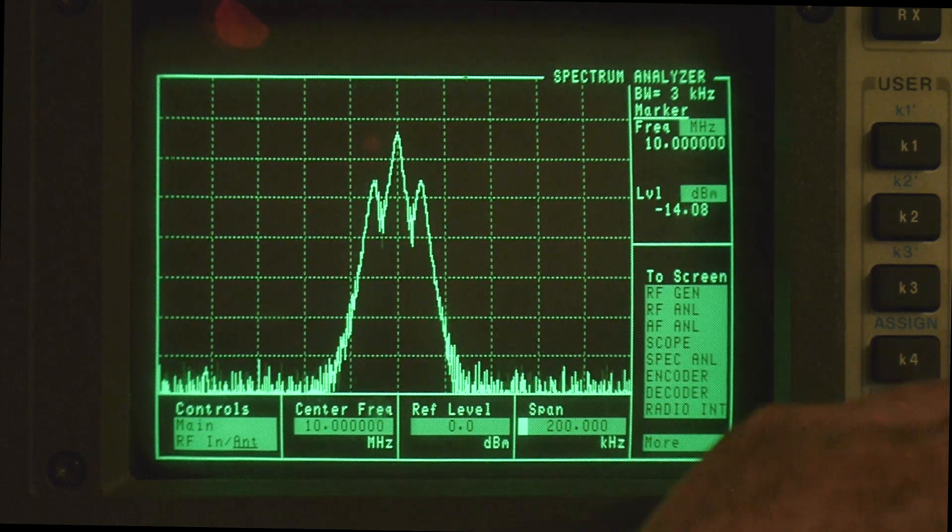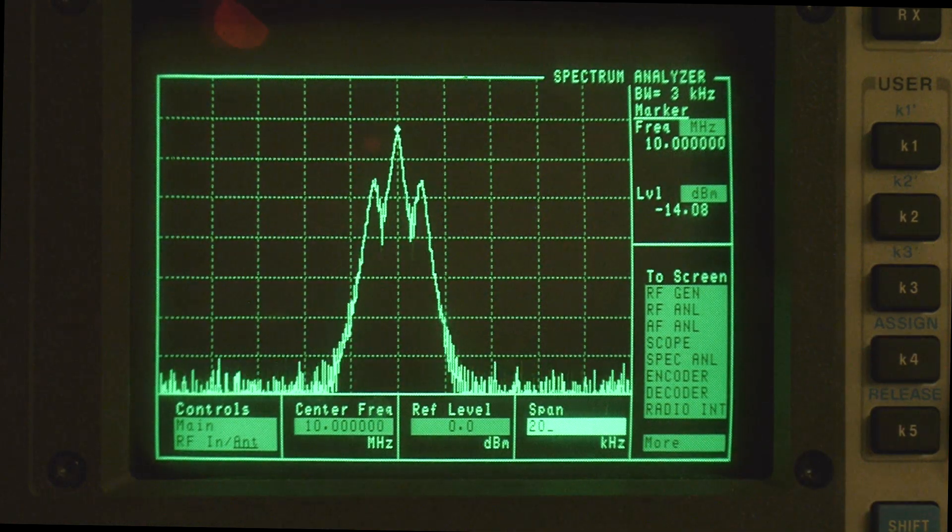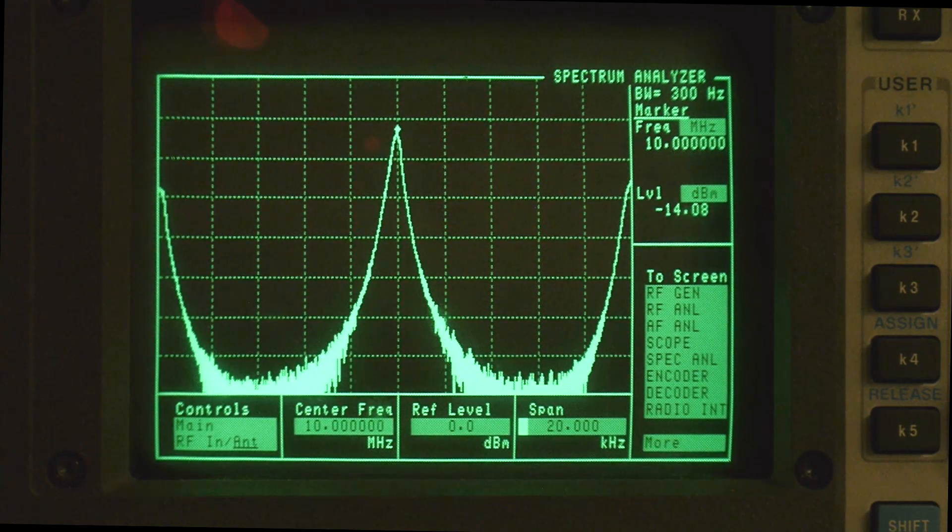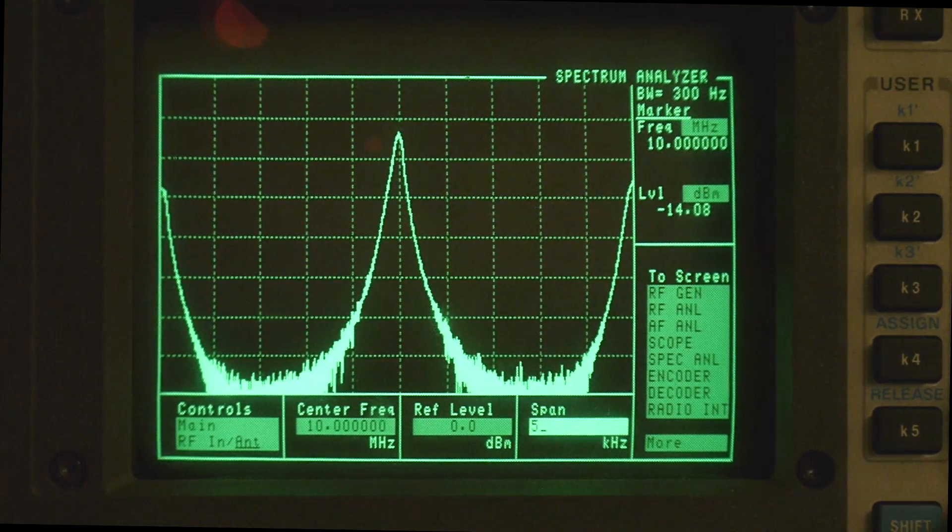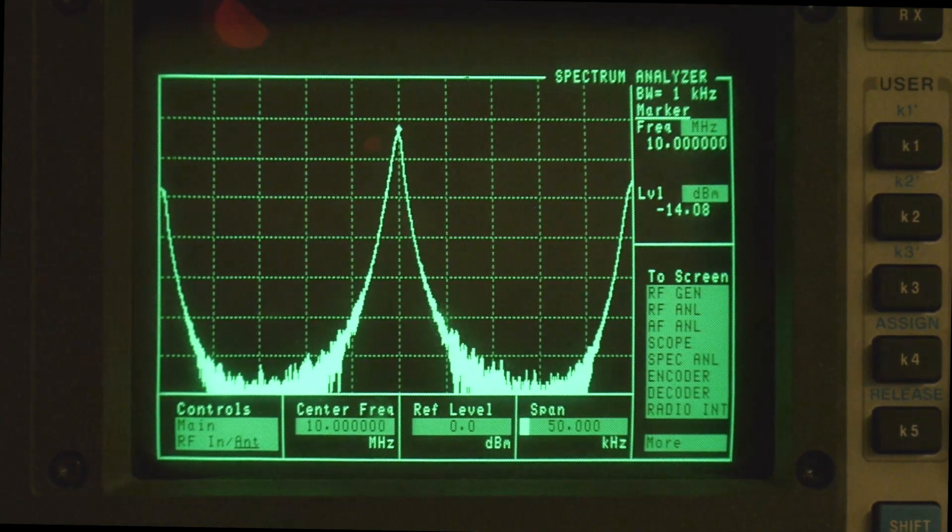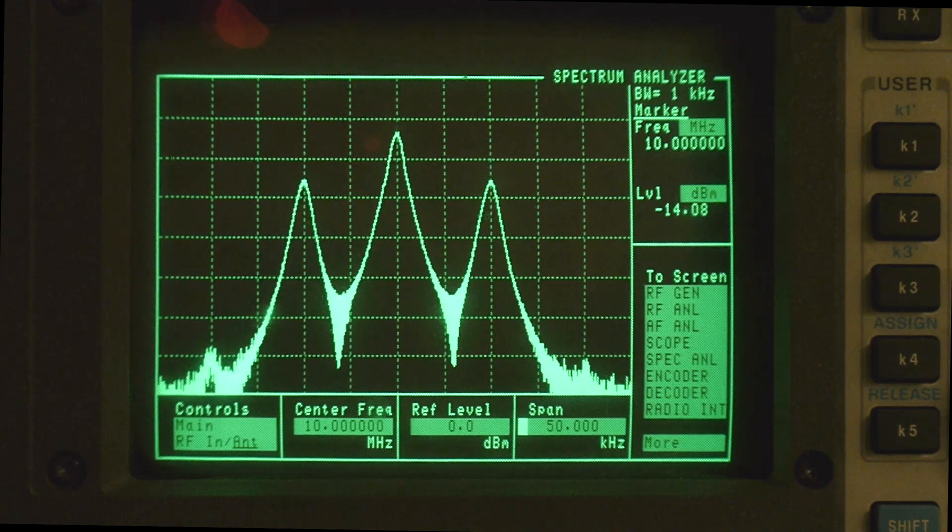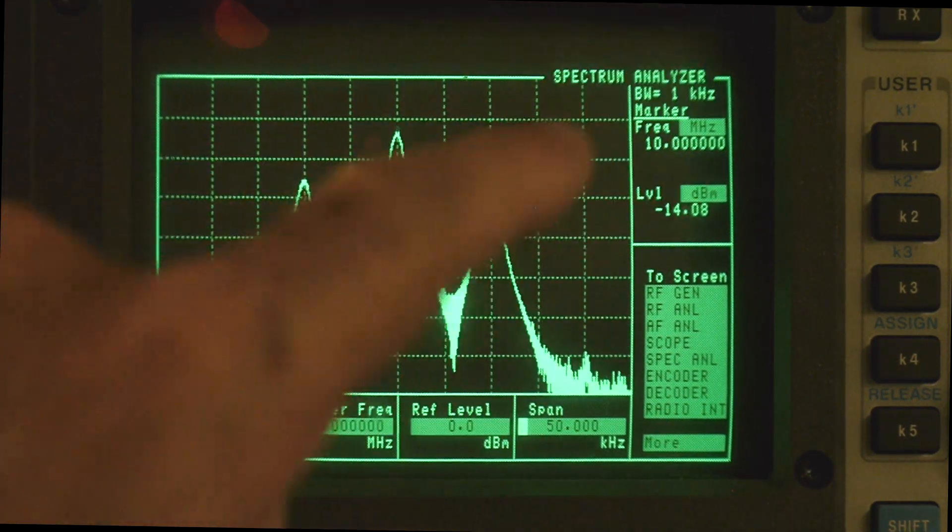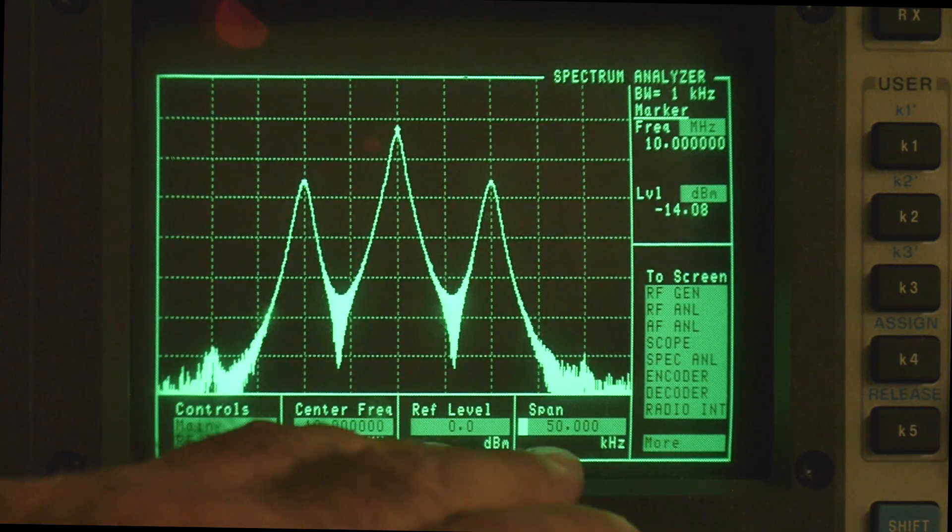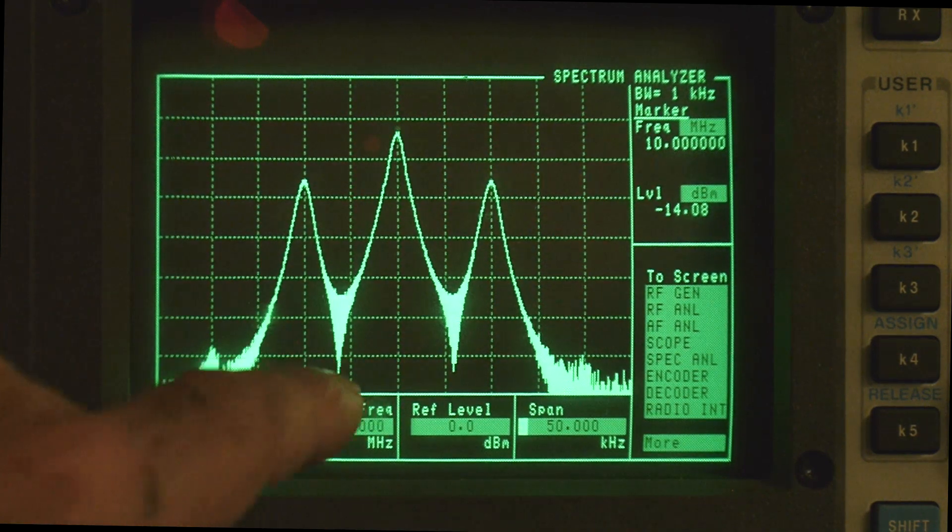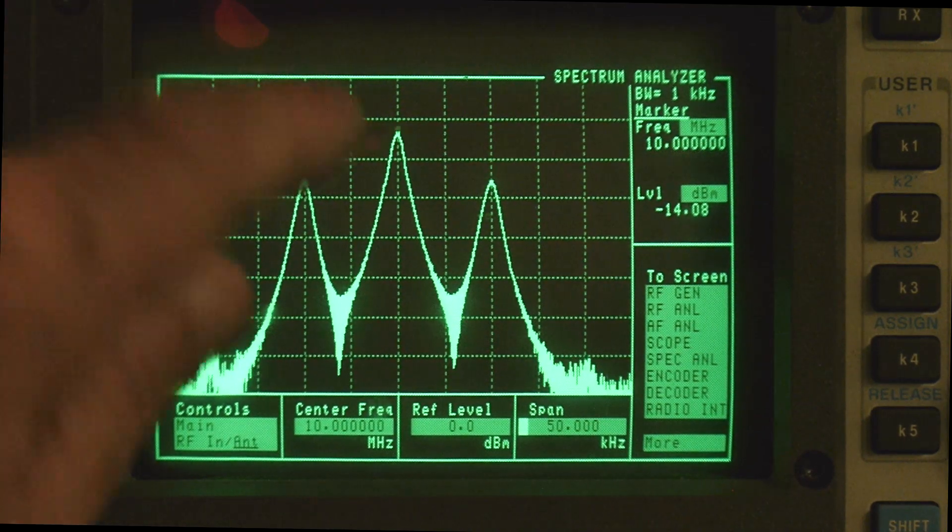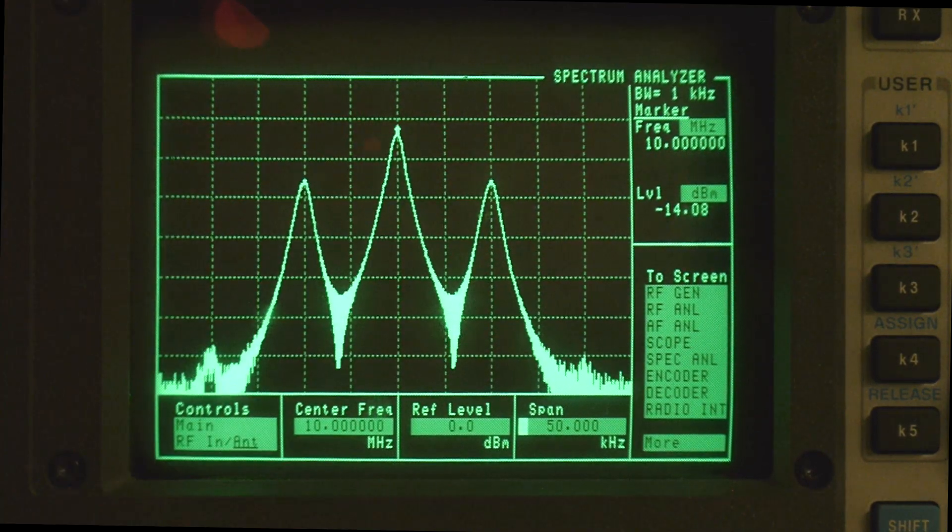In fact, we can zoom in on this. So if I change my span from 200 kilohertz to 20 kilohertz, I've gone too far. Let's see here. I'll change this to 50 kilohertz. There we go. So these are the 10 kilohertz carriers, and you can see that we're seeing those really, really well. It's very easy for us to determine those.